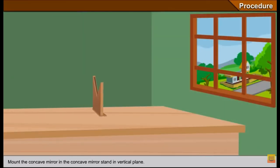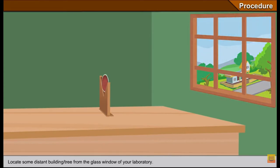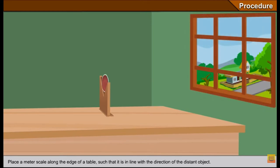Now let us see the procedure. Keep the mirror stand on the table. The table should be close to a window and the mirror is fixed in this mirror stand, and distant object that can be any tree or any building outside the window. That's the distant object.